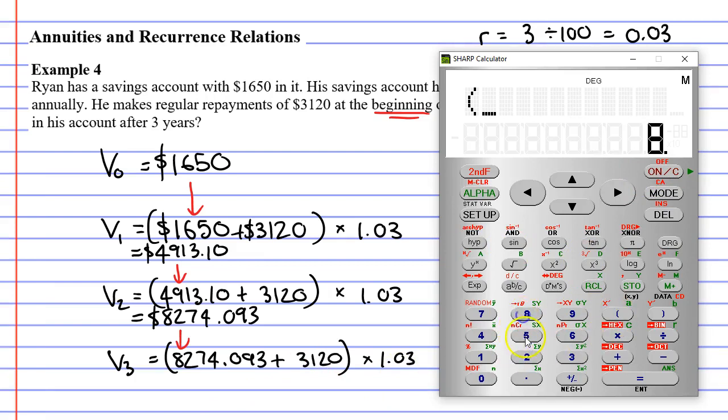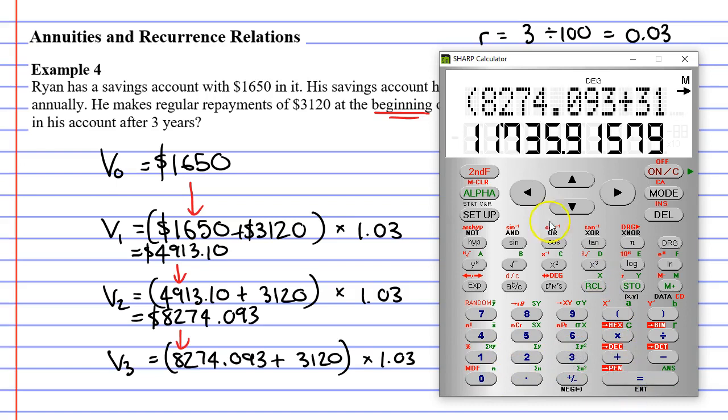Brackets, $8,274.093, plus our repayment of $3,120, close our brackets, times 1.03, which increases it by 3%. And we get $11,735.92 when we round it up.